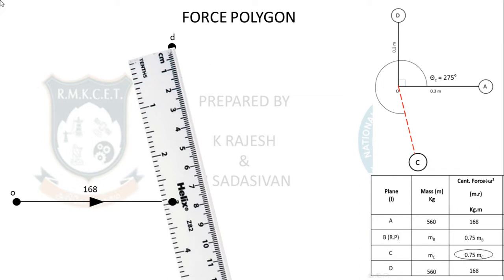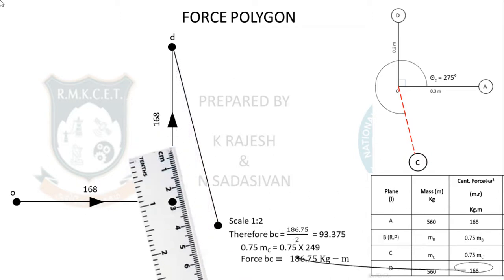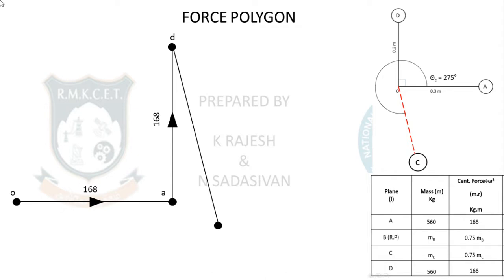Close the polygon. Follow the same-sense arrow mark shortcut. The closing side represents 0.75 MB — the only remaining unknown. Measure the closing length; it comes to approximately 93.975 mm. Multiply by 2: 0.75 MB = 186.75, so mass B = 249 kg. The polygon is unconventional in shape (coming outside), but the procedure is correct.